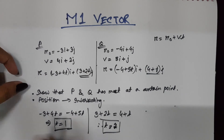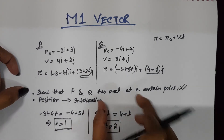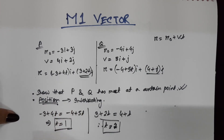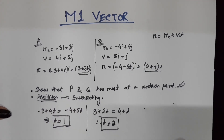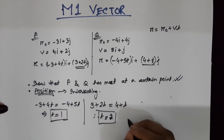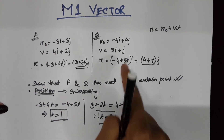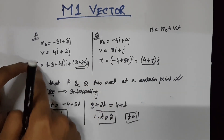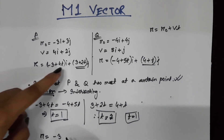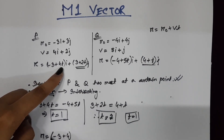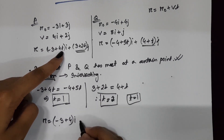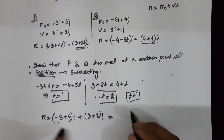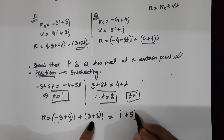After proving that the two particles have met, we can find the position of intersection. To find the position of intersection, substitute t = 1 into any one of the equations. Using the equation for particle P with t = 1 gives the intersecting point as i + 5j.